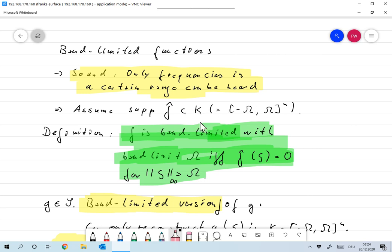We call a function f in S band-limited with band limit omega if the Fourier transform of f vanishes for infinity norm of ξ larger than omega.